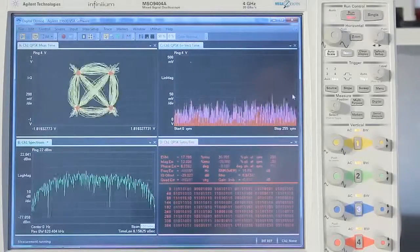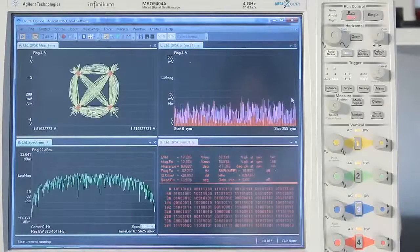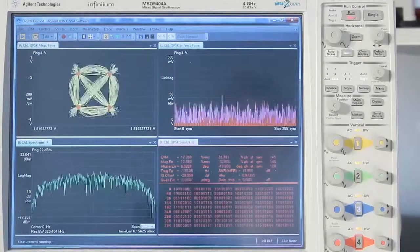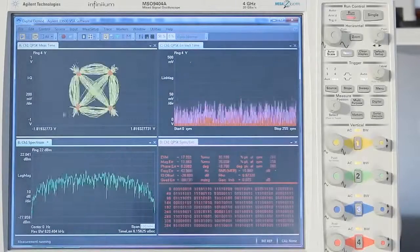In the upper left corner you see the constellation diagram. In the lower left part the RF spectrum of the signal.